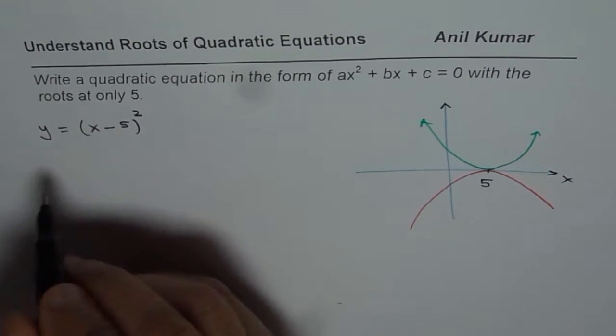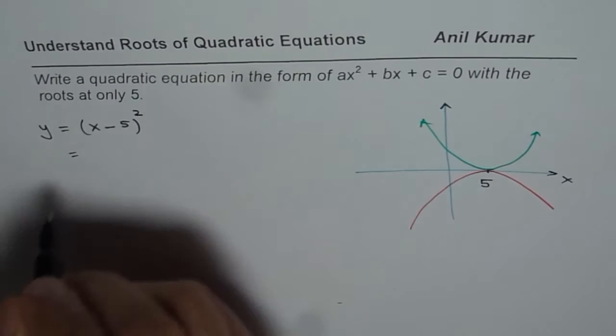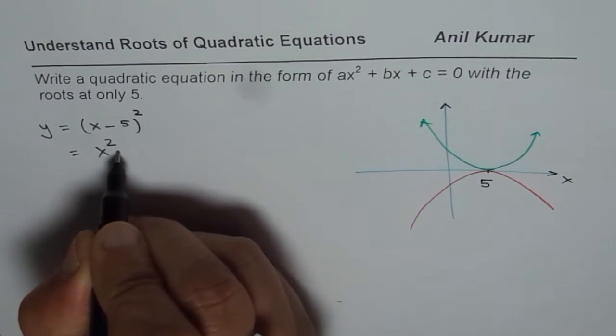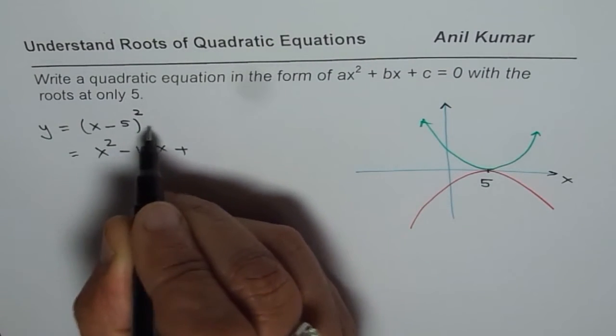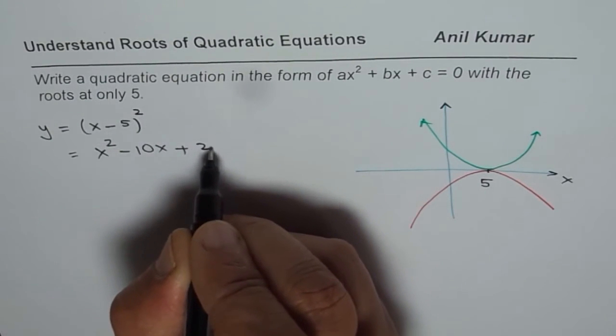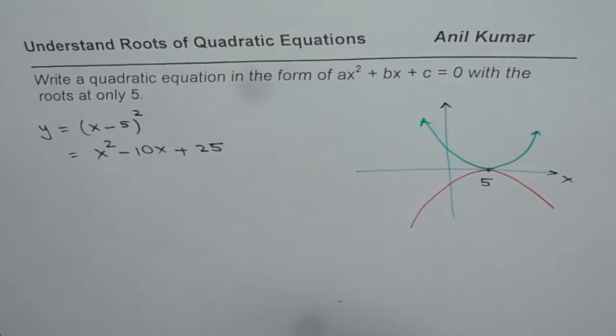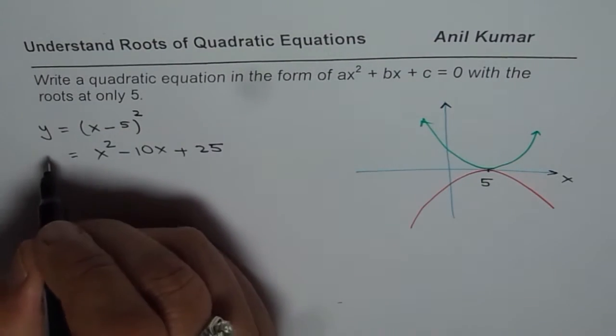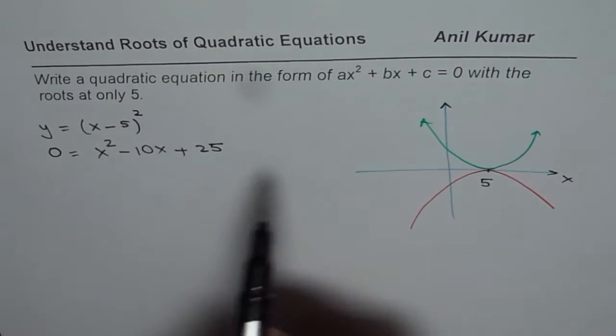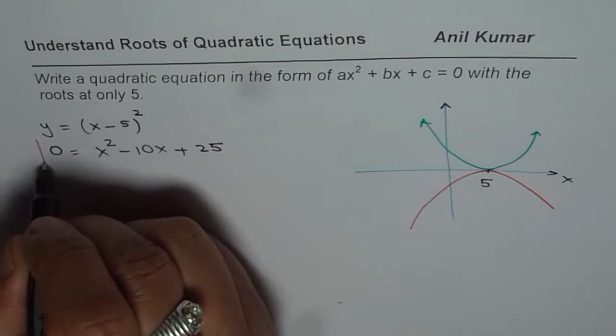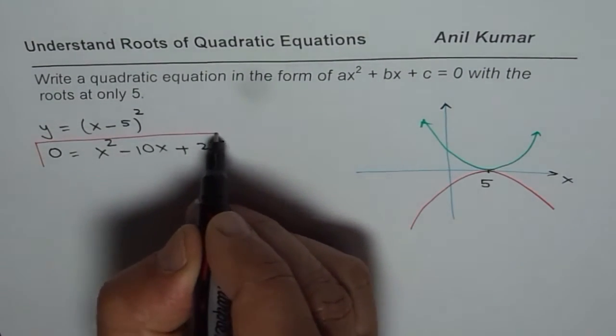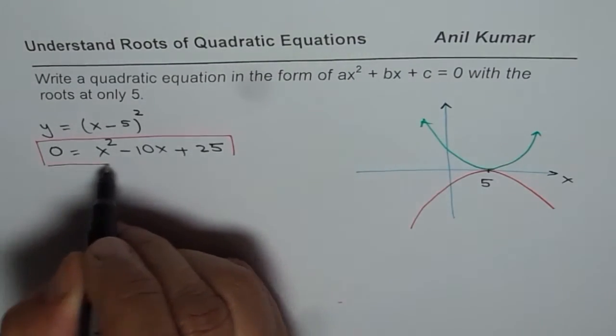We could write this equation as, let us expand this. When you expand, we get X squared minus 2AB, that is 10X, plus 5 squared, which is 25. So we could get this equation. And equating this to 0 gives us the equation of the form we are looking for. So equating that to 0 gives us that particular form.